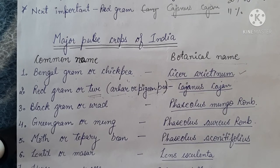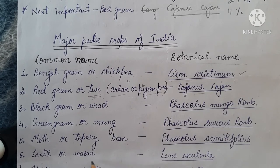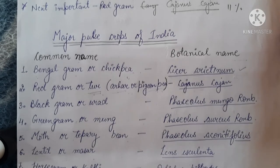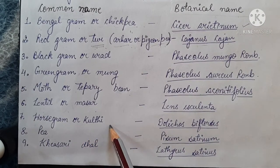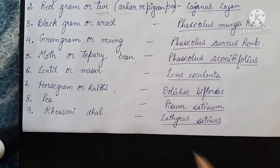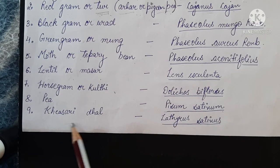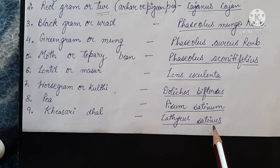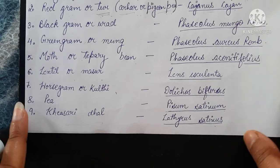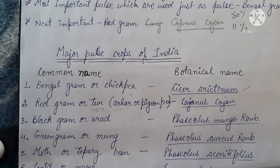In similar manner: green gram or moong ki daal, moth or tapering bean; lentil or masoor ki daal; horse gram or kulti, also called kulti ki daal. Next is pea, with the scientific name Pisum sativum, known to all of us since school days. The last one is kesari daal, Lathyrus sativus. These are the major pulse crops grown in India — you can go through their scientific names and common names.